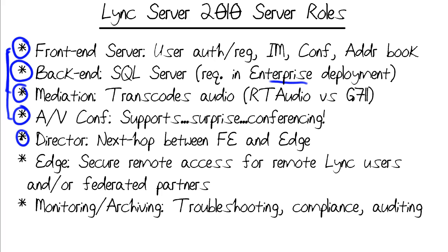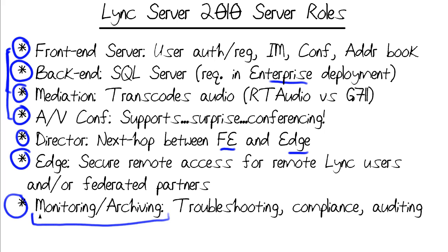The Director is truly an optional role, primarily for security. It serves as a next hop between the internal network where your front-end servers reside and your edge server on your demilitarized zone or screened subnet. The edge server role allows secure remote access, so remote or roving Lync users out on the public internet can make a secure connection with their Lync client and interact with other Lync users inside the corporate firewall seamlessly. Finally, monitoring and archiving are fairly low-overhead server roles that can be co-located on the same box, and are used for troubleshooting, compliance, and auditing.